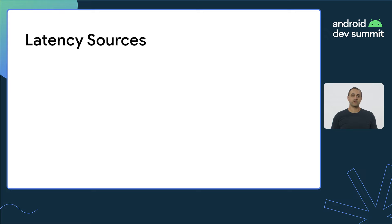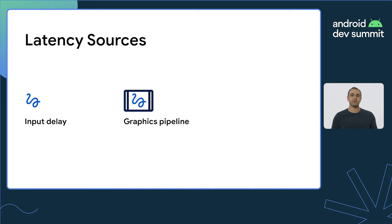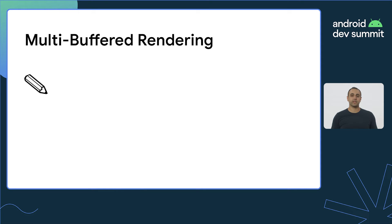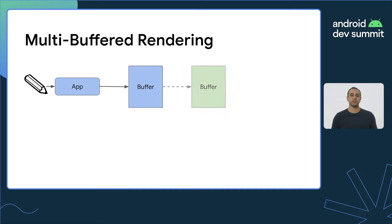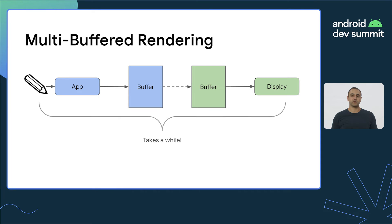Let's take a moment to identify the sources of latency. There is input delay between the moment the stylus touches the display and when your application receives the input event. There's also latency within the graphics rendering pipeline. Android historically has leveraged multi-buffered rendering. This ensures smoothness in user experience with no visual tearing, in exchange for some additional latency between when the application renders content and when that content is visible on display. With this mechanism, the display is consuming a buffer while the application is rendering into a separate one.